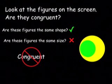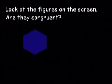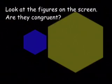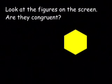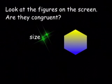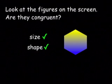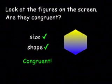Look at the hexagons on the screen. Try and decide if you think they are congruent. Remember to ask yourself if they are the same size and the same shape. Are these two plain figures congruent? If you said yes, you're right. They are the same size and the same shape.